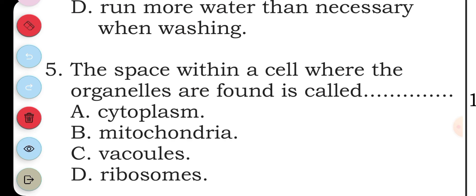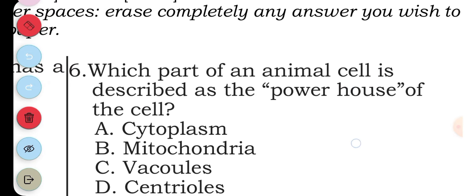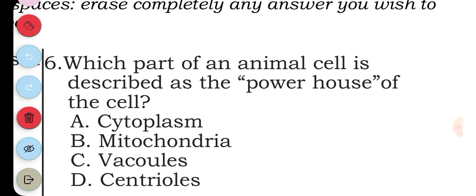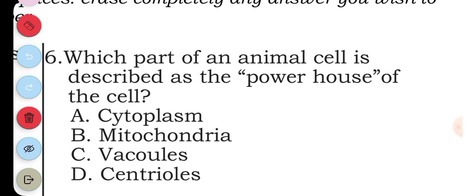The answer to question five is A. Question six: which part of an animal cell is described as the powerhouse of the cell? A cytoplasm, B mitochondria, C vacuoles, D centrioles. The answer to question six is B, mitochondria.